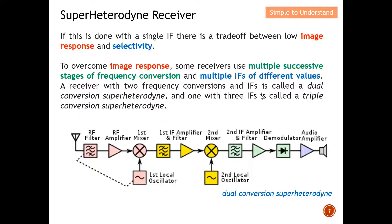Next, let's look at the dual conversion superheterodyne receiver. With a single IF stage, there is a trade-off between low image response and selectivity — you can only choose one. To overcome image response issues, some receivers use multiple stages of frequency conversion with multiple IF values of different frequencies. A receiver with two frequency conversions is called a dual conversion superheterodyne, and one with three IFs is called a triple conversion superheterodyne. In this diagram, you can see the first mixer and the second mixer, confirming this is a dual conversion superheterodyne receiver.